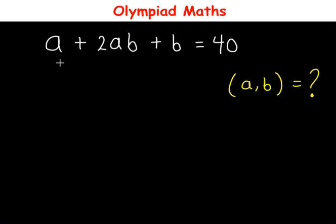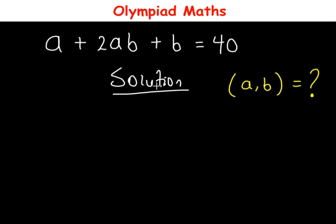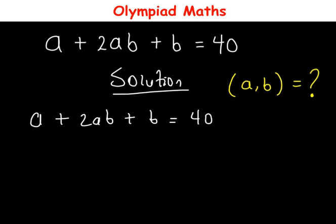Hello everyone. In this video, let us solve this question. We have a + 2ab + b = 40. We need to find the values of a and b. So we have a + 2ab + b = 14. Now we factorize out 2a from this: we have 2a into brackets (1/2 + b).